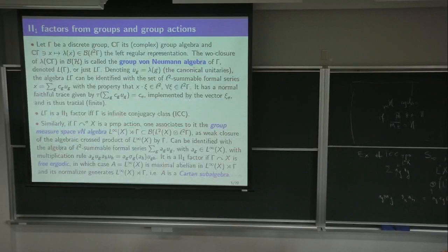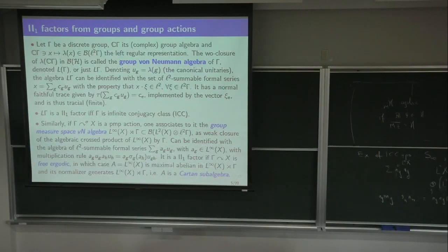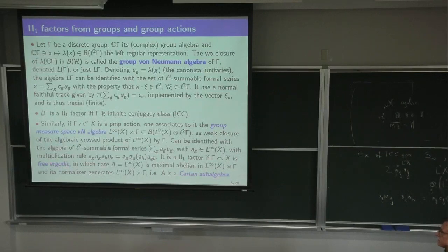This will be a II₁ factor; a sufficient condition for this to be a II₁ factor is that the action be free and ergodic, with Γ infinite and X a non-atomic probability measure space. However, notice that another case is when X is the one-point probability space and Γ is ICC — in which case you get the previous example. Another sufficient condition is that Γ is ICC and the action is ergodic.